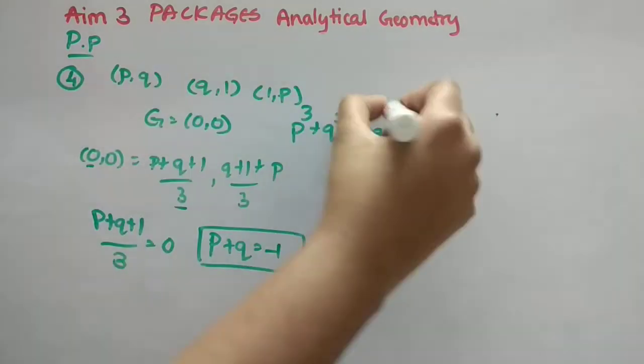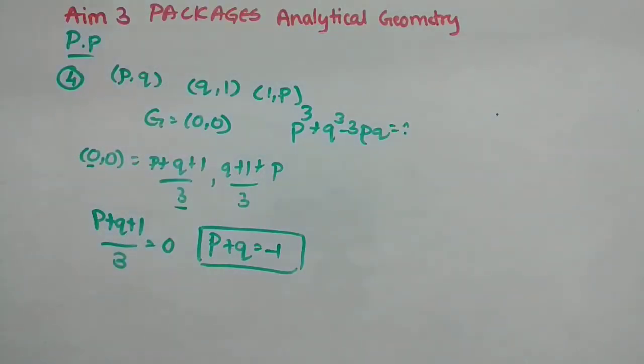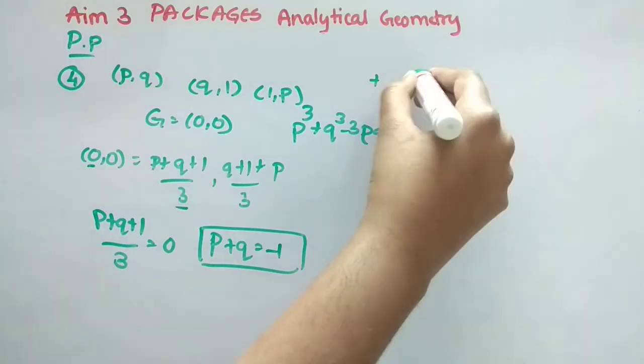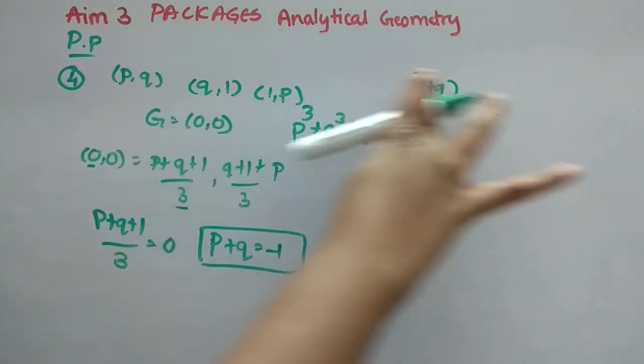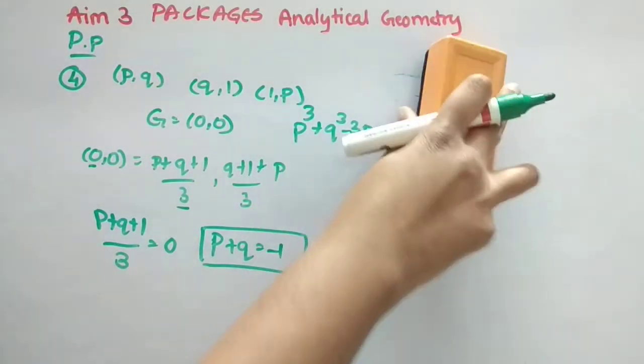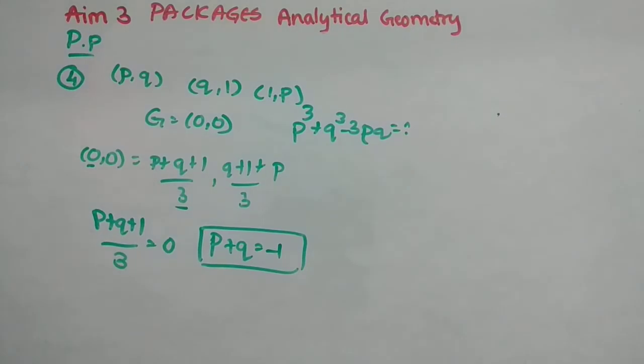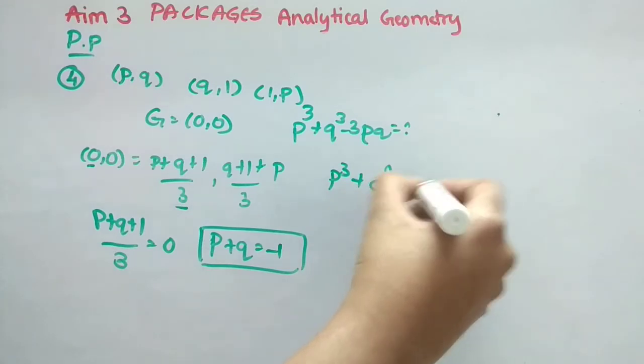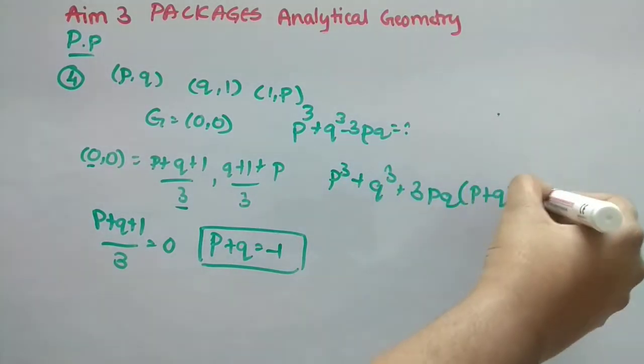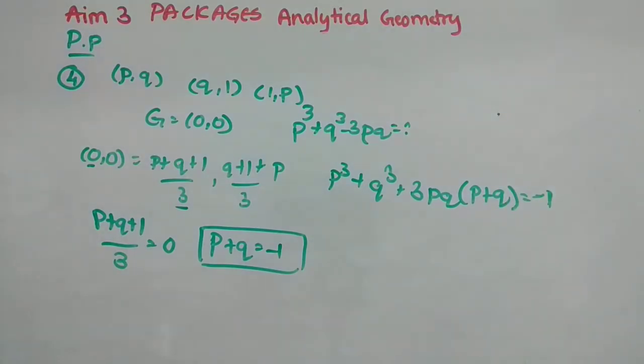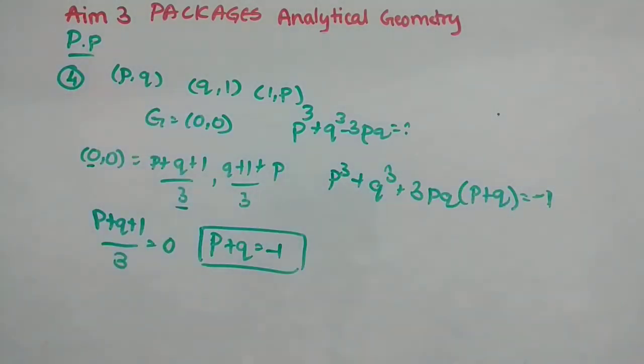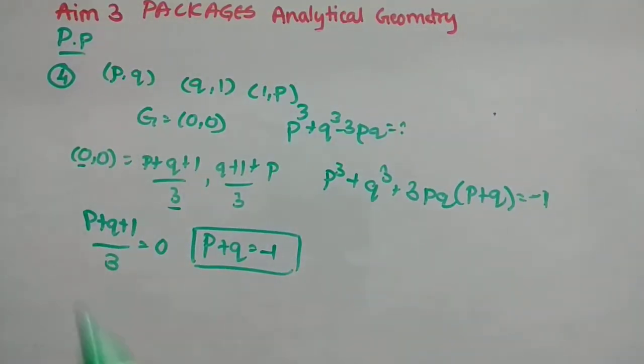So what is the answer means? Actually, we have to find this. For that, see, if I add one more, like if I make this minus plus and if I add one P plus Q here, then it becomes P³ plus Q³. That is like A³ plus B³. That formula we can use and do.